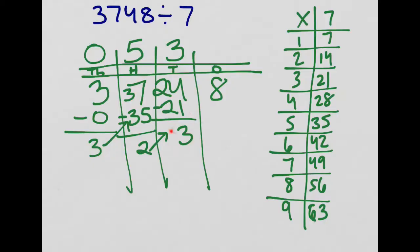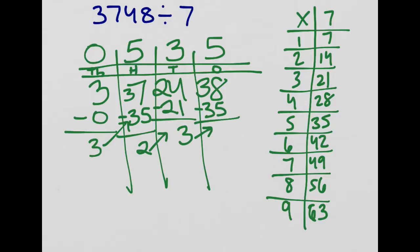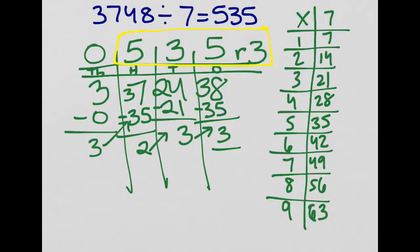I'm going to the bank again to change my tens in for $1 bills — I just move my remainder next door into the ones place. Now I'm looking at the number 38. Going down my list of multiples, 35 is close without going over and 42 is too big. So I'm going to use 35 of those ones, which lets me make five groups of seven. I subtract away the 35, and I have three left over. I don't have any more place value places to work with, so this three becomes my remainder. I've got a five in the hundreds, a three in the tens, and a five in the ones — my answer is 535 remainder 3.